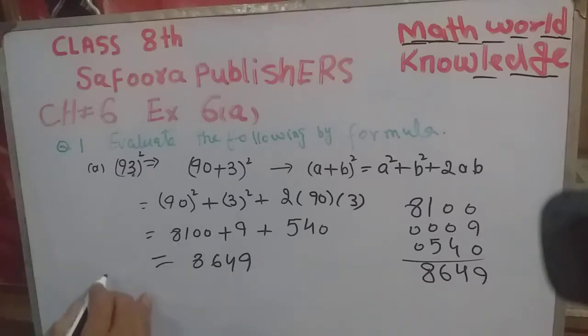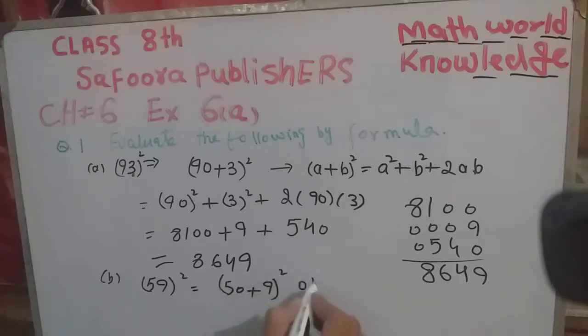Similarly, second part is b. Its value is 59 square. Now by using formula, 50 plus 9, or also you can write as 60 minus 1 whole square. This question can be solved in two methods, first one is...